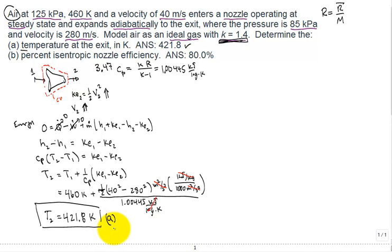Now what is that percent isentropic nozzle efficiency? Well, the definition of the nozzle isentropic efficiency, we can look up. It's equation 6.47 in our textbook.